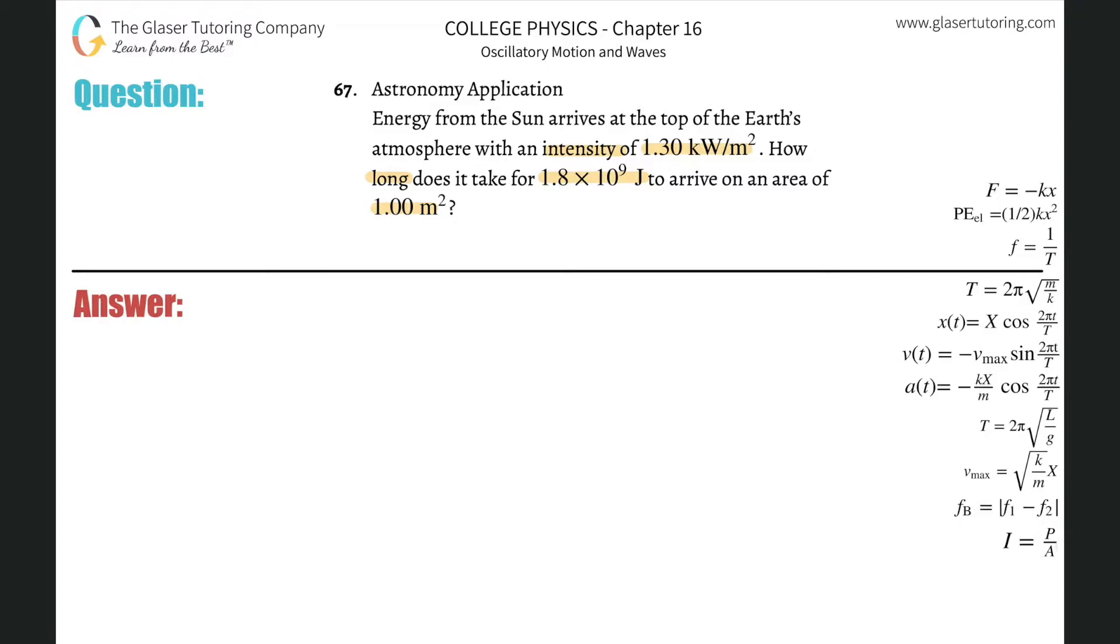Alright, so first thing is they tell us an intensity, so let's just start with that. I already noticed something's off with the unit. In terms of plugging in intensity into formulas, we can't use kilowatts necessarily. We should really use watts. So I'm going to do that conversion. 1,000 watts is 1 kilowatt. That cancels the kilowatts. And now we're going to have this is about 1,300 watts per meter squared.